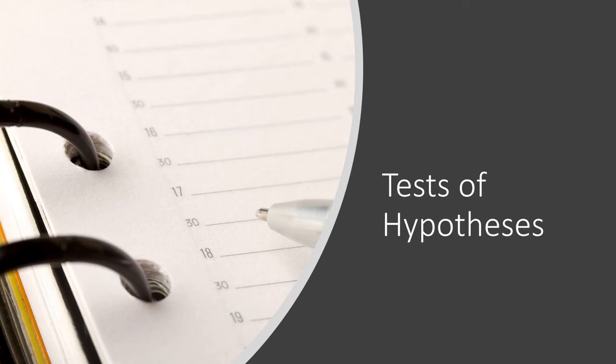Good day. Today we are going to discuss the test of hypothesis. Let's assume a superintendent of a school gets a report. The national mean NACA score is 91. Additionally, imagine that his division's students have a mean of 96. Could the superintendent come to the conclusion that his students perform better than the average student?